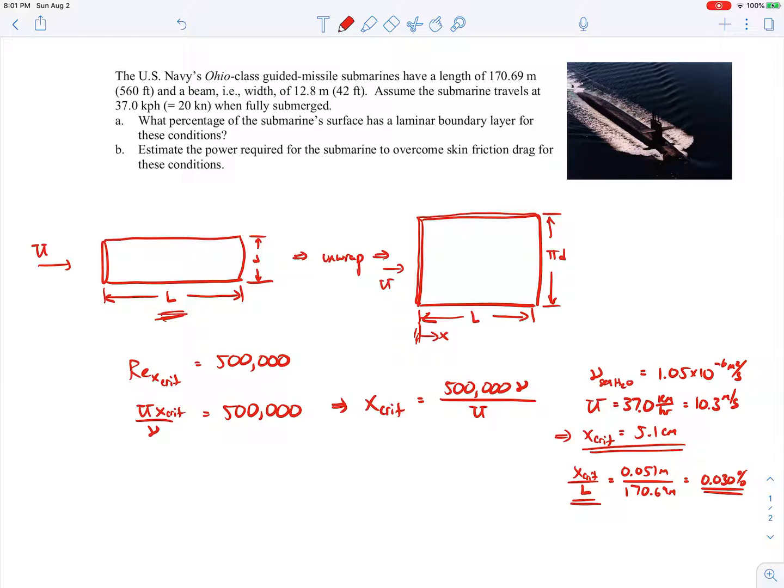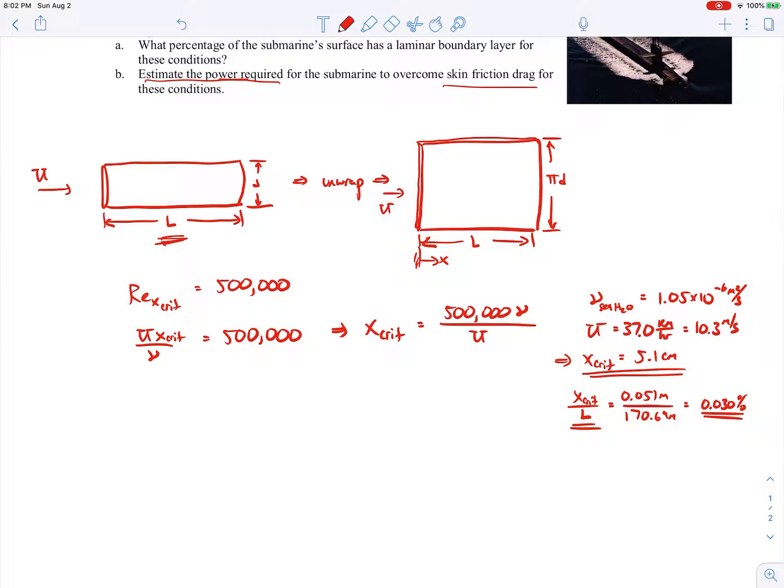Essentially the entire surface is turbulent, so that gives us some insight into part B when we're asked to find the power required for the submarine to overcome the skin friction drag for those conditions. Let's just treat the entire flow over the surface as being turbulent, since most of it is. And if that's the case, then we can use our turbulent boundary layer correlations.